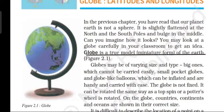In our previous lesson we read that our planet earth is not a sphere — it is not round. Its shape is described as geoid. The earth is slightly flat at the north and south poles but it bulges, meaning it is round from the middle. A globe is a 3D model of the earth. It looks exactly like our earth but it is in a miniature form — miniature means small. So a globe is a smaller model of our planet earth.